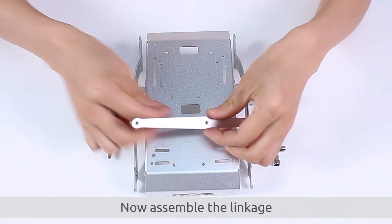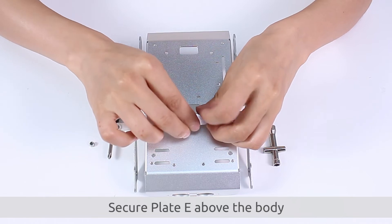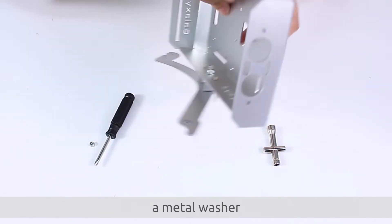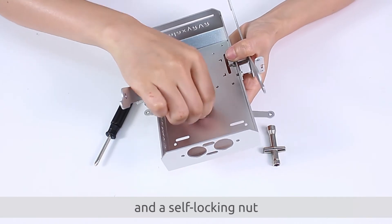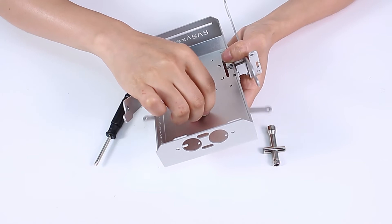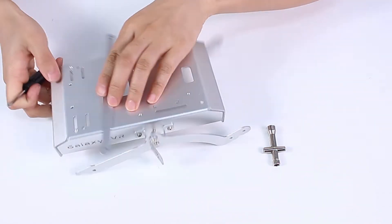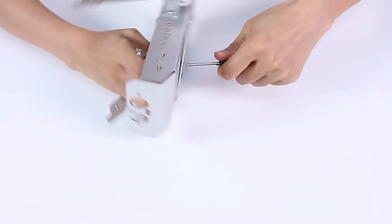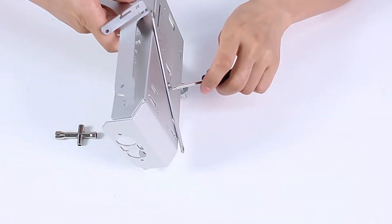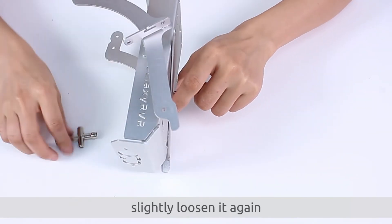Now assemble the linkage. Secure plate D above the body using an M3 x 10 screw, a metal washer, and a self-locking nut. After tightening, slightly loosen it again.